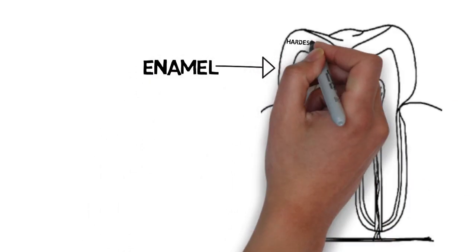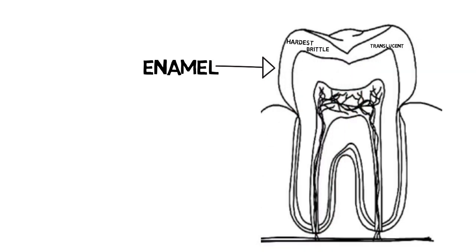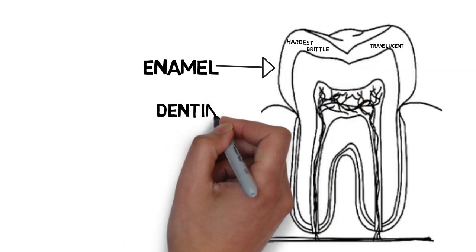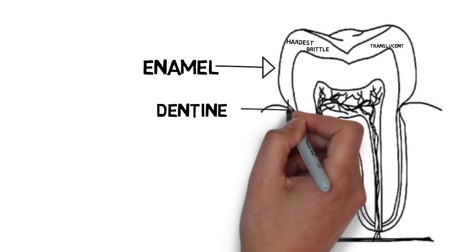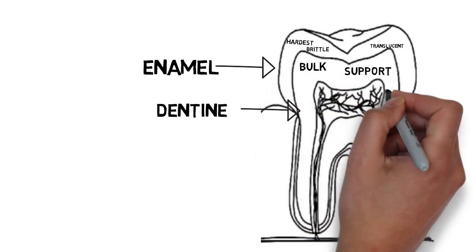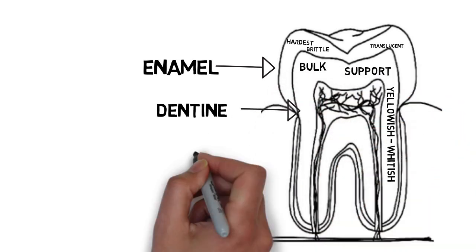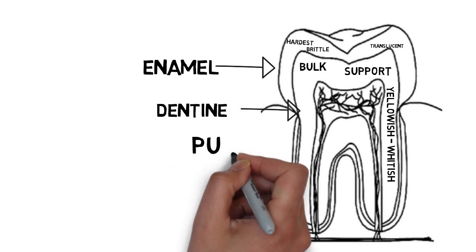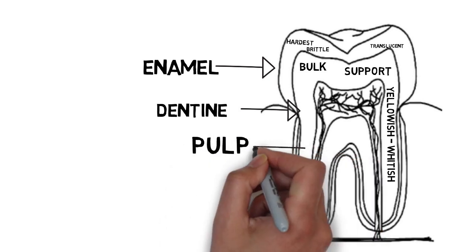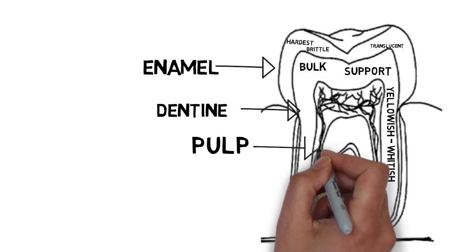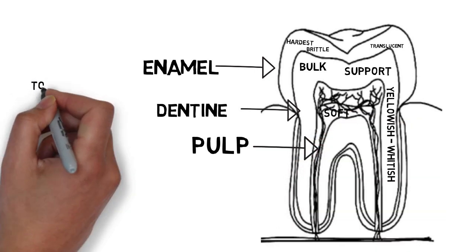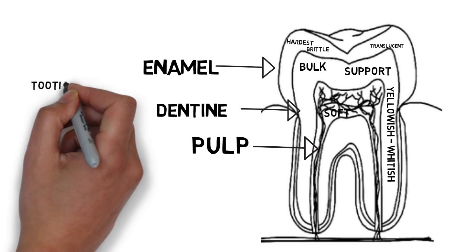To summarize, we have three important components. First, enamel — the hardest natural substance, brittle, but translucent. Second, dentine — makes up the bulk of the tooth, supports the brittle enamel, is not vascularized but has regenerative and reparative capabilities. Third, the pulp — the innermost soft connective tissue that houses stem cells, nerves, and blood vessels, and helps in regeneration of dentine.